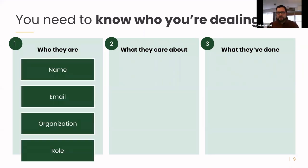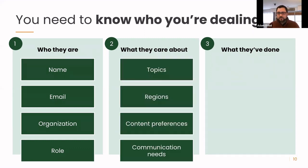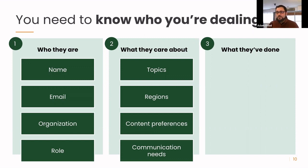Who they are is basic information — email, names, organizations, a person's role. These are the fundamentals about a given person. You also want to know what they care about: which topics resonate with a particular audience member. If you have content on a wide range of topics, it's highly likely your contacts will only care about a small sliver. Regions, content preferences, communication needs — does this person like PDFs, do they watch videos, do they interact with you on social media? Can they subscribe to specific emails they want to receive?